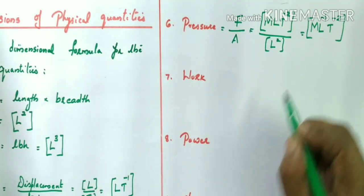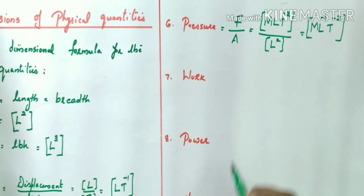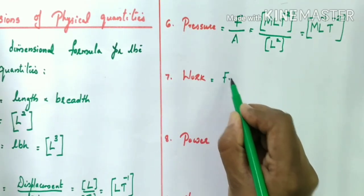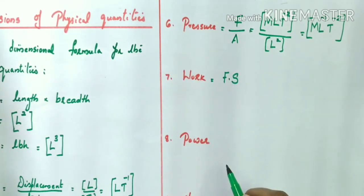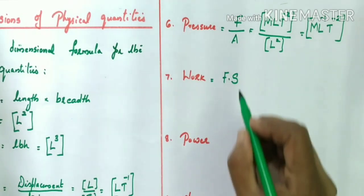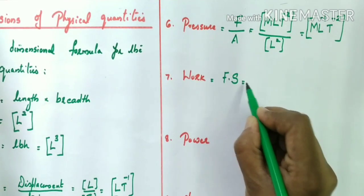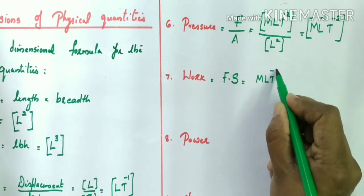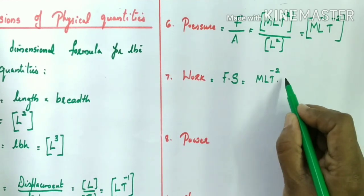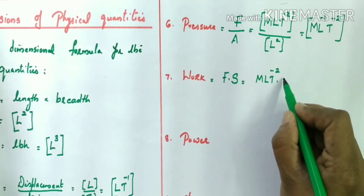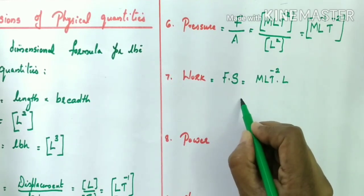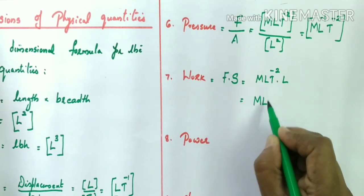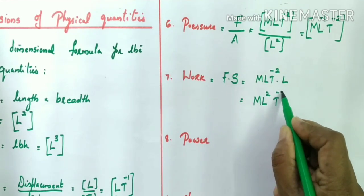Work is equal to force into displacement. The dimensional formula for force is [MLT⁻²], and the dimension of displacement is the same as length, which is L. So the dimensional formula for work is M × L × L = [ML²T⁻²].